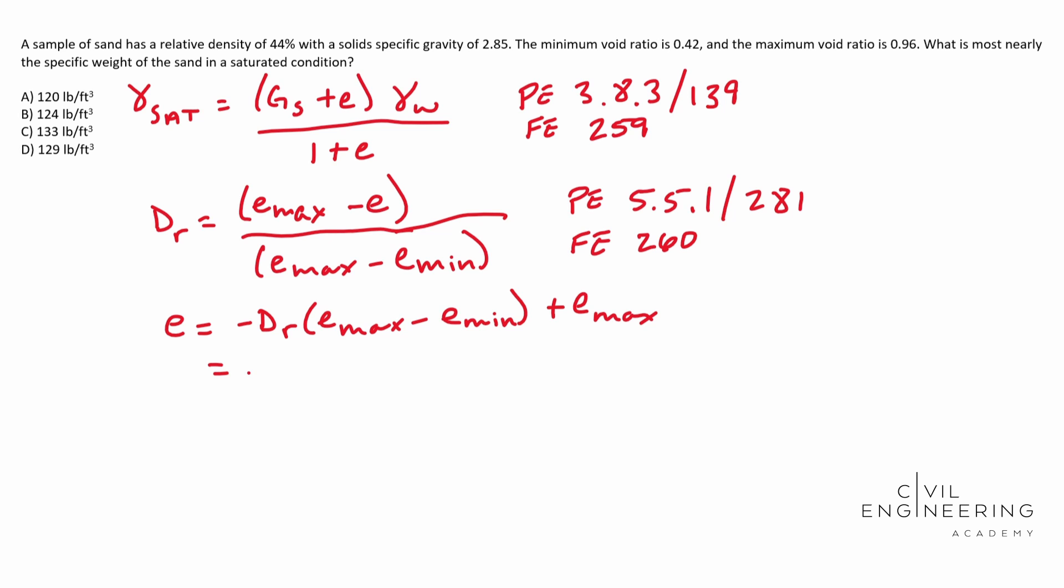And when we plug in our numbers, you end up with negative 0.44 times 0.96 minus 0.42 and all that plus 0.96. And so our E ends up being 0.7224.